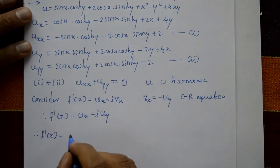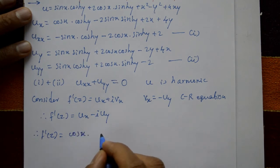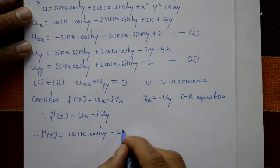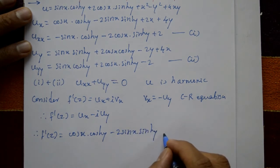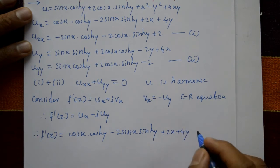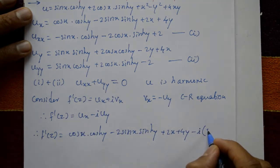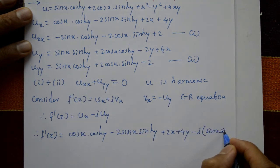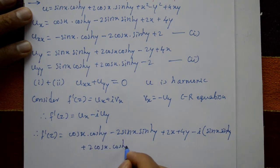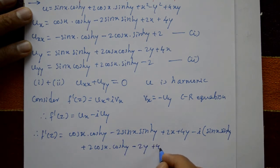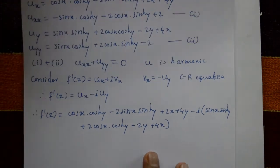Therefore f'(z) equals: first u_x is cos(x)·cosh(y) minus 2sin(x)·sinh(y) plus 2x plus 4y, minus i times u_y, where u_y is sin(x)·sinh(y) plus 2cos(x)·cosh(y) minus 2y plus 4x.